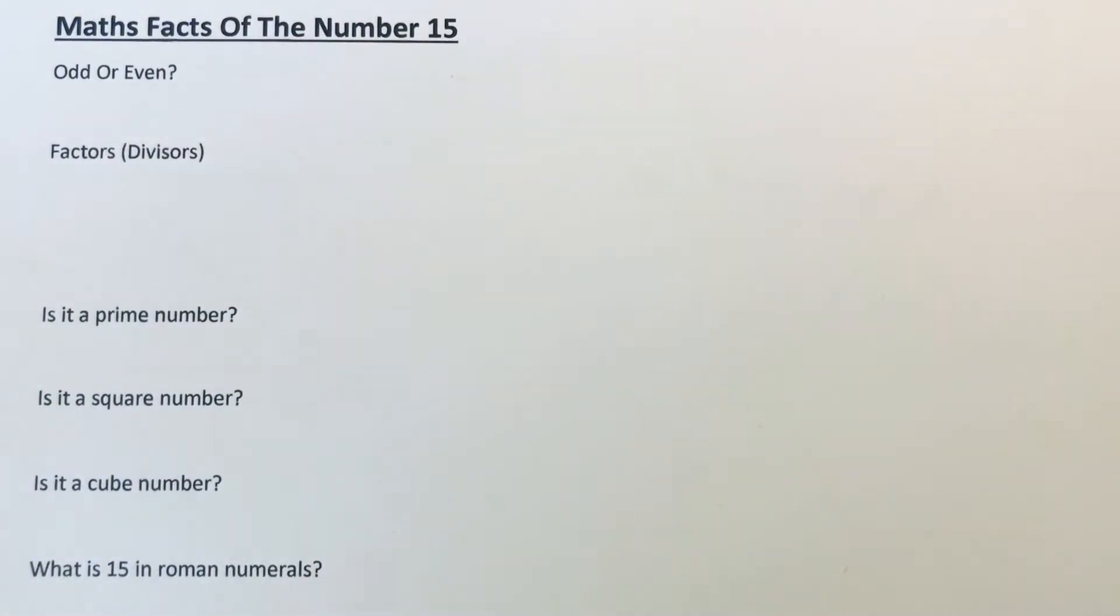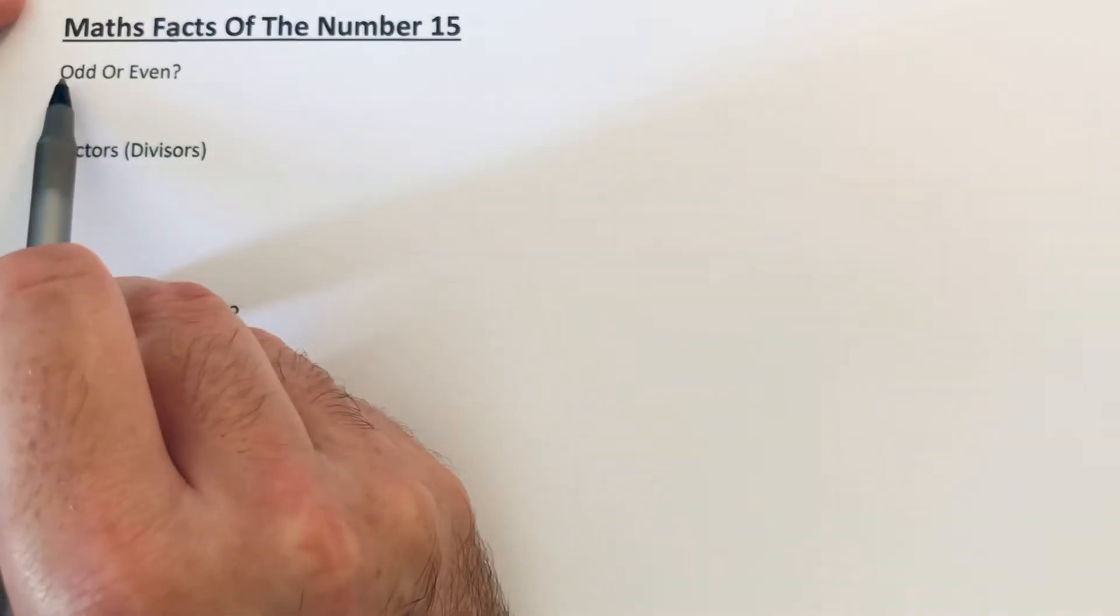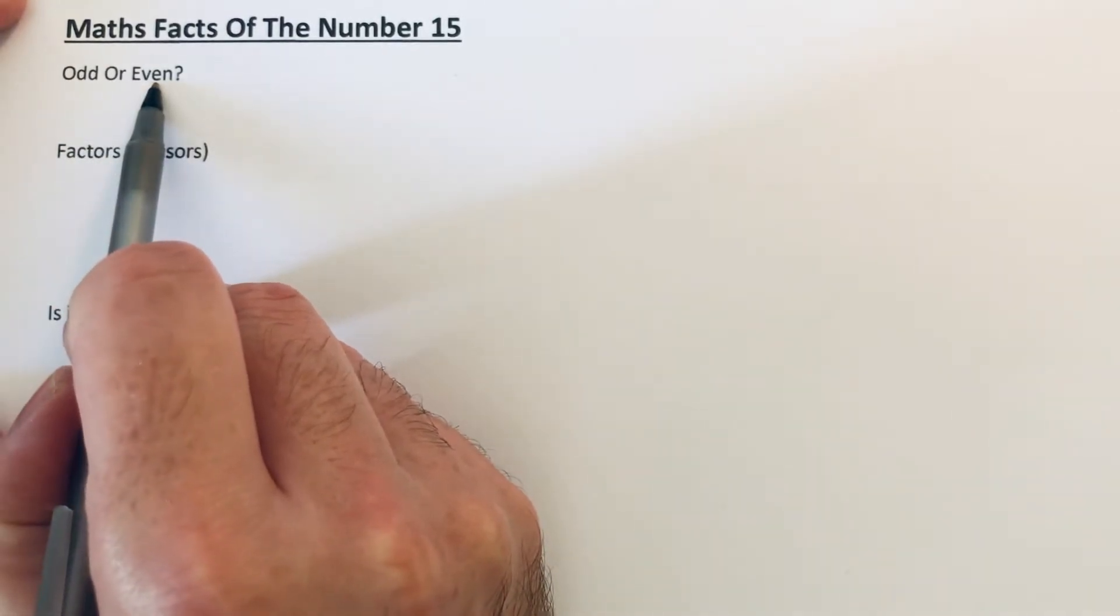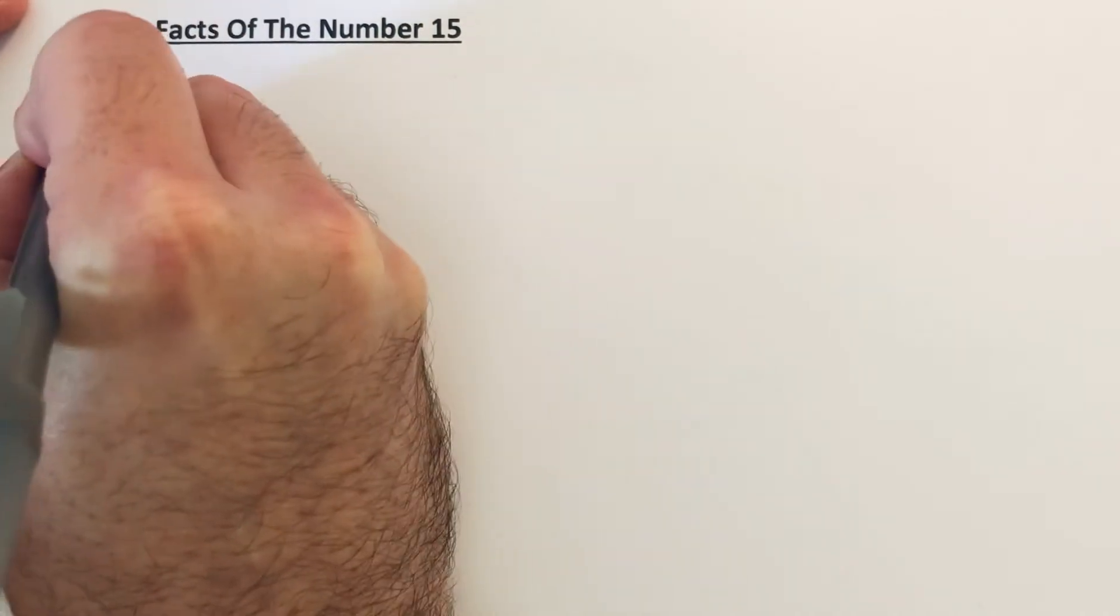Hi guys, welcome back. This is Maths 3000. We want to talk about the maths facts of the number 15. The first question: is the number odd or even? Well, 15 is odd because it's not a multiple of two.